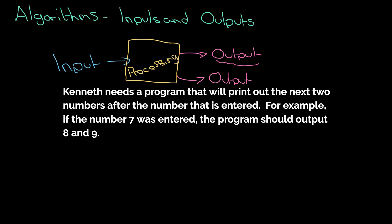Kenneth needs a program that will print out the next two numbers after the number that is entered. For example, if the number seven was entered, the program should output eight and nine. So can we identify the inputs and the outputs? And then from that, can we start figuring out how to get there?